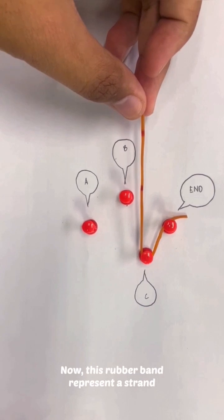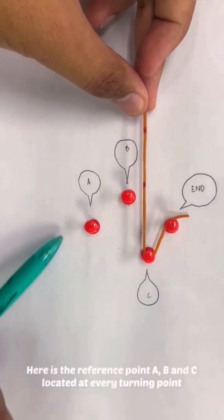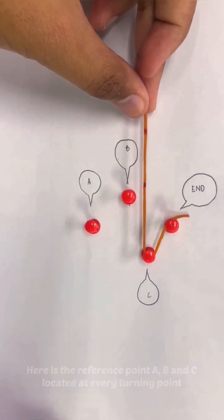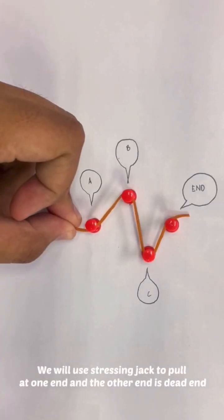Now this rubber band represents a strand. Here are the reference points A, B, and C located at every turning point. We will use a stressing jack to pull at one end and the other end is the dead end.